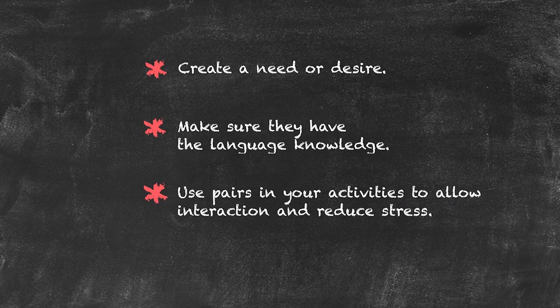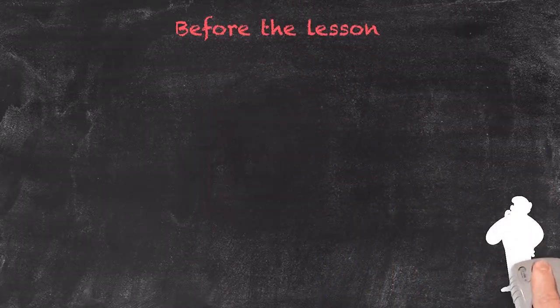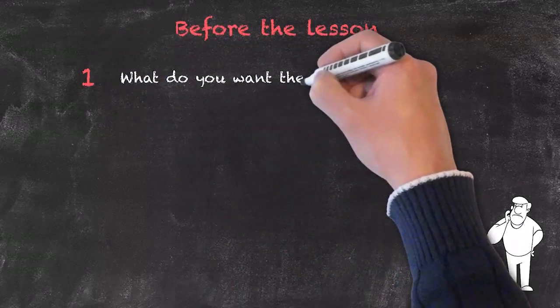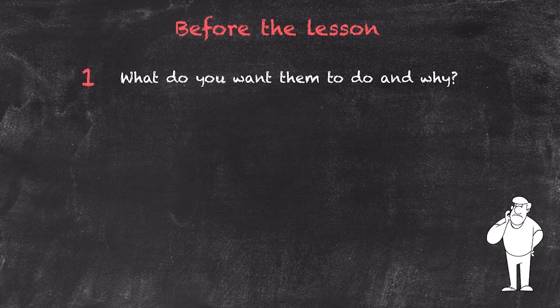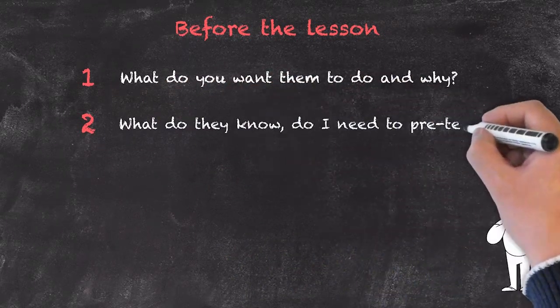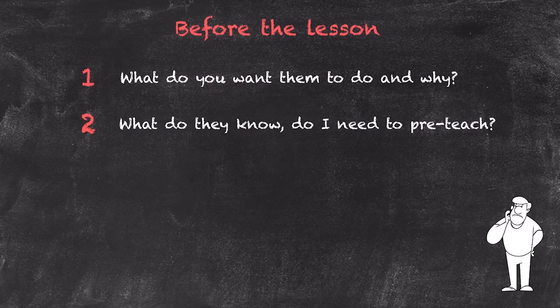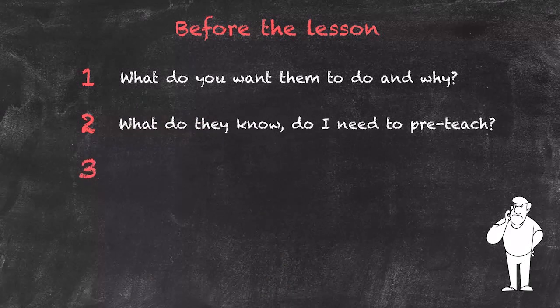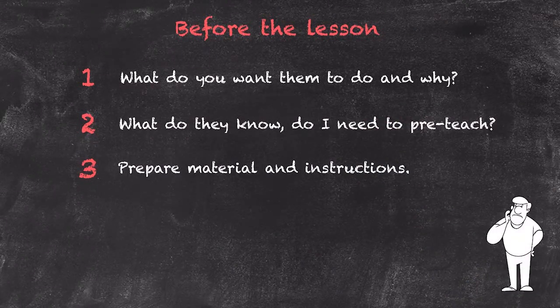Let's consider a typical speaking lesson and the stages we need to go through from start to finish. Before the lesson takes place, you need a very clear idea of what you're expecting students to do and they need to know why — it's very important that they have an understanding of the purpose of the activity. You should also have thought about what they already know, and whether it will be necessary to do any pre-teaching. Finally, we need to make sure we've prepared all materials and instructions. We'll consider a straight arrow ESA lesson with a focus on speaking skills.